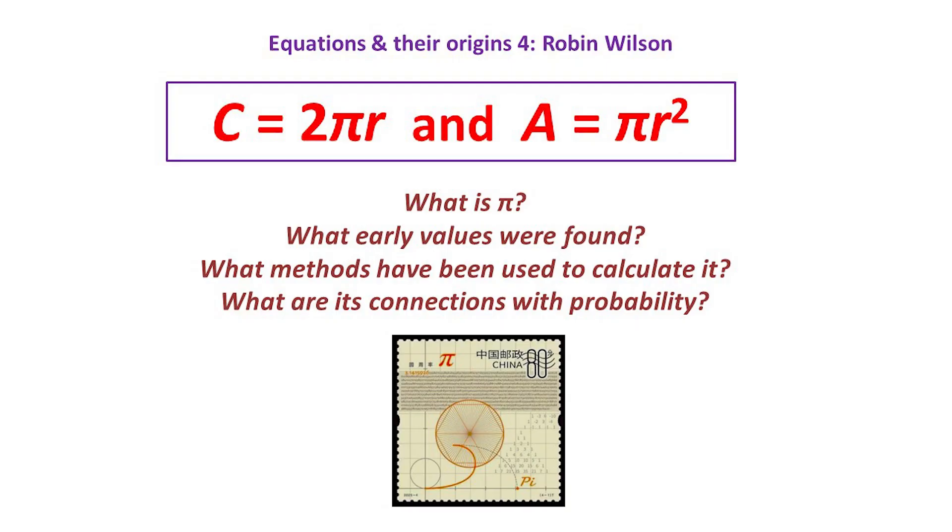This talk is about the circle number pi. But what is this number? What early values are found for it? What methods have been used for calculating it? And what are its connections with probability?